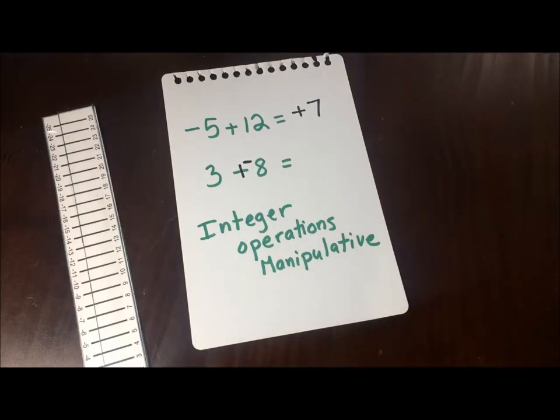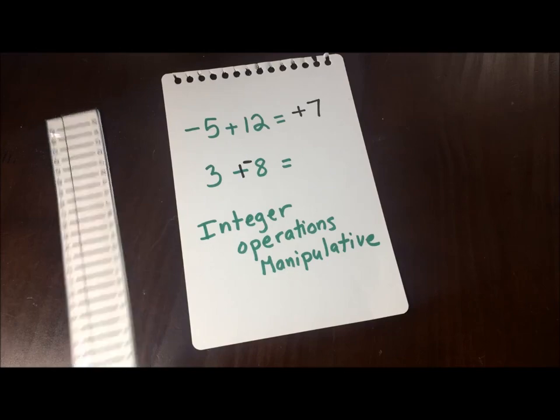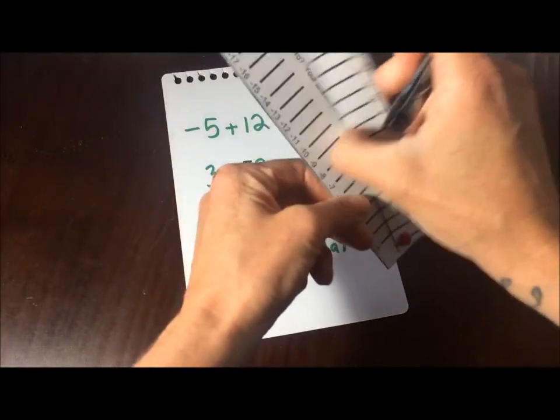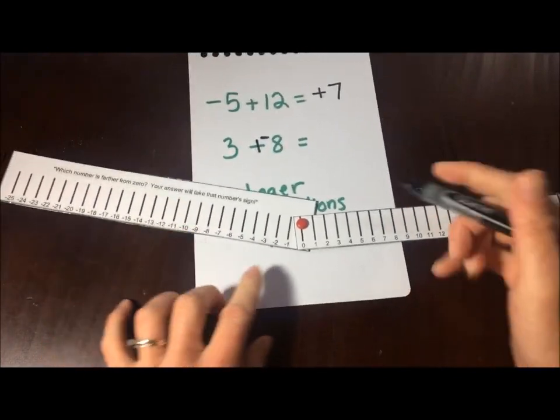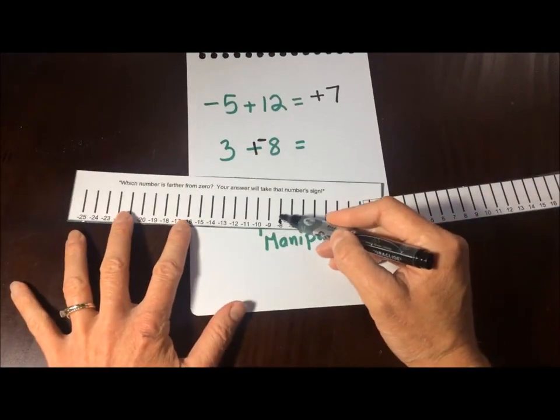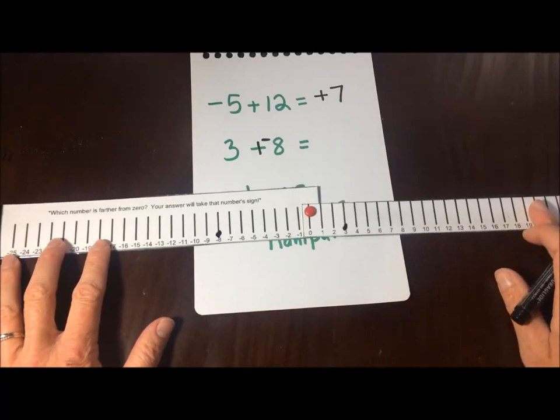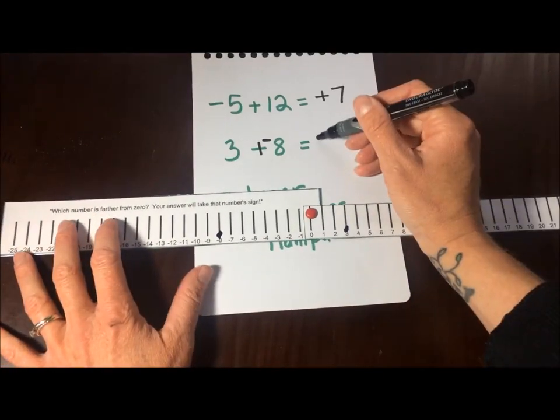This way we have 3 plus negative 8, 2 concrete numbers. So we have 3, we find 3. We find negative 8. We see that negative 8 is farther away from zero. So our answer will be negative.